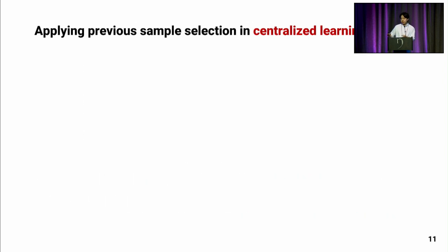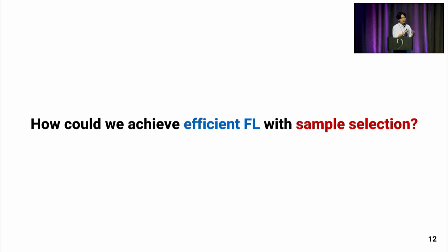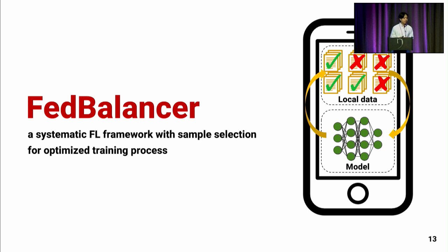We need a better sample selection strategy for federated learning. Unfortunately, we cannot simply apply previous approaches from centralized learning — for example, importance sampling approaches require private user data sharing between clients, which breaks the privacy guarantee of federated learning. So our real research question is: how could we achieve efficient federated learning with sample selection? As an answer, we propose FedBalancer, a systematic federated learning framework with sample selection for an optimized training process.